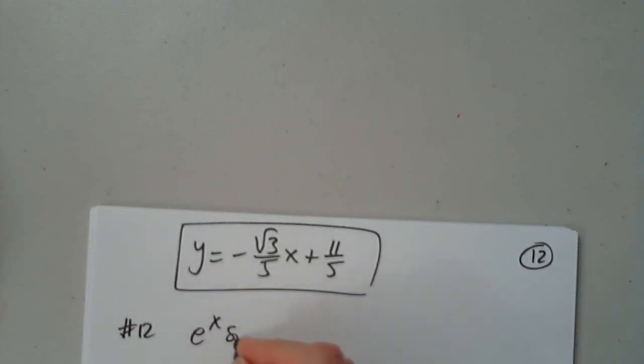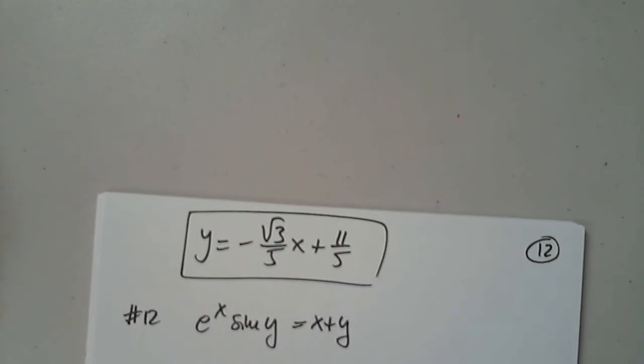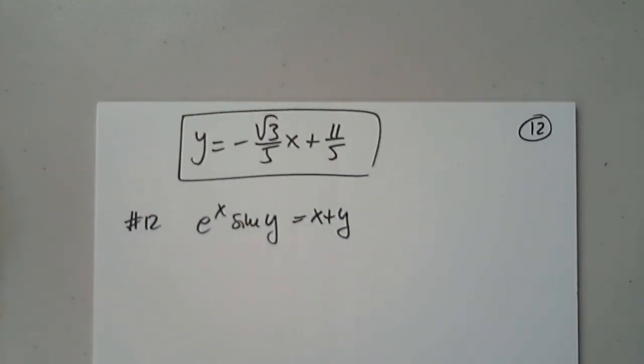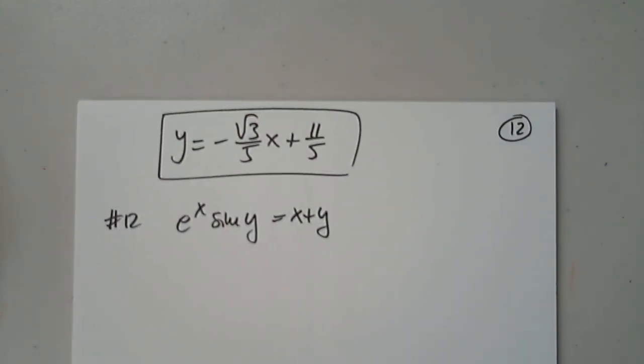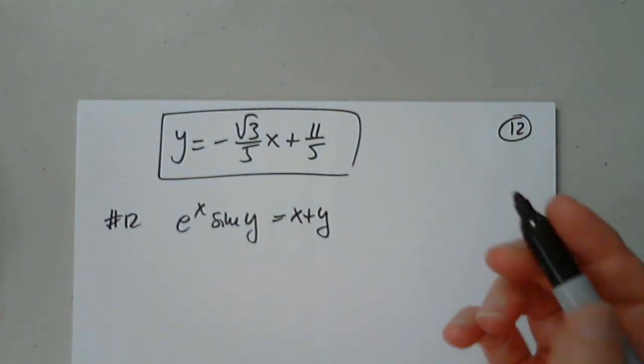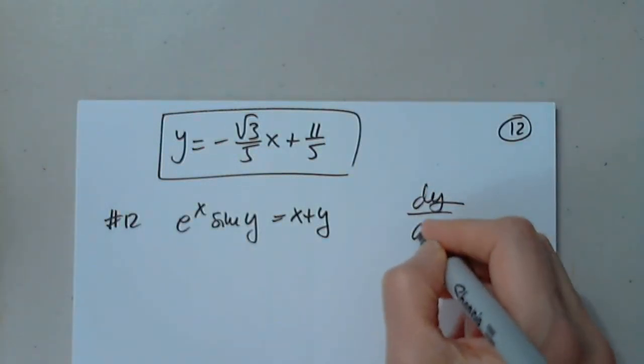So e to the x sine y equals x plus y. Perfect pick. So again, no one can solve for y, so we are asked to find dy over dx.